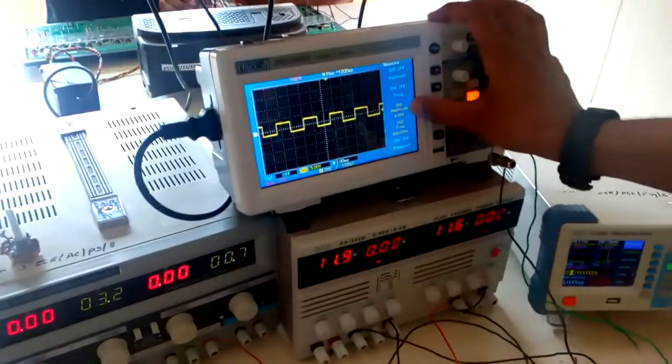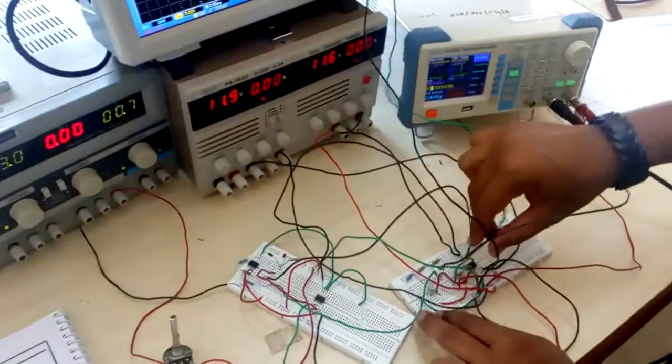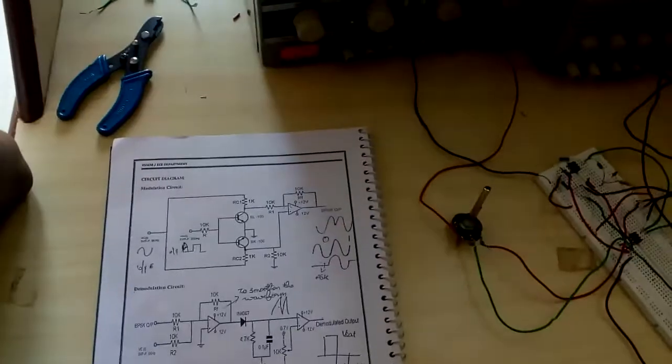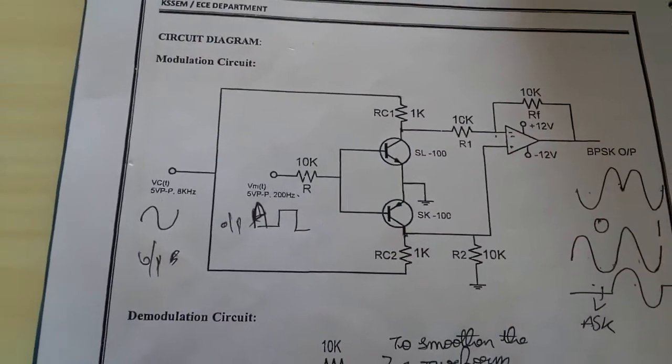The message signal is 5V peak-to-peak, 200Hz. You get the same on the DSO, so the signal generator port is working fine. Now we will connect the carrier signal, which is 5V peak-to-peak, 8kHz.